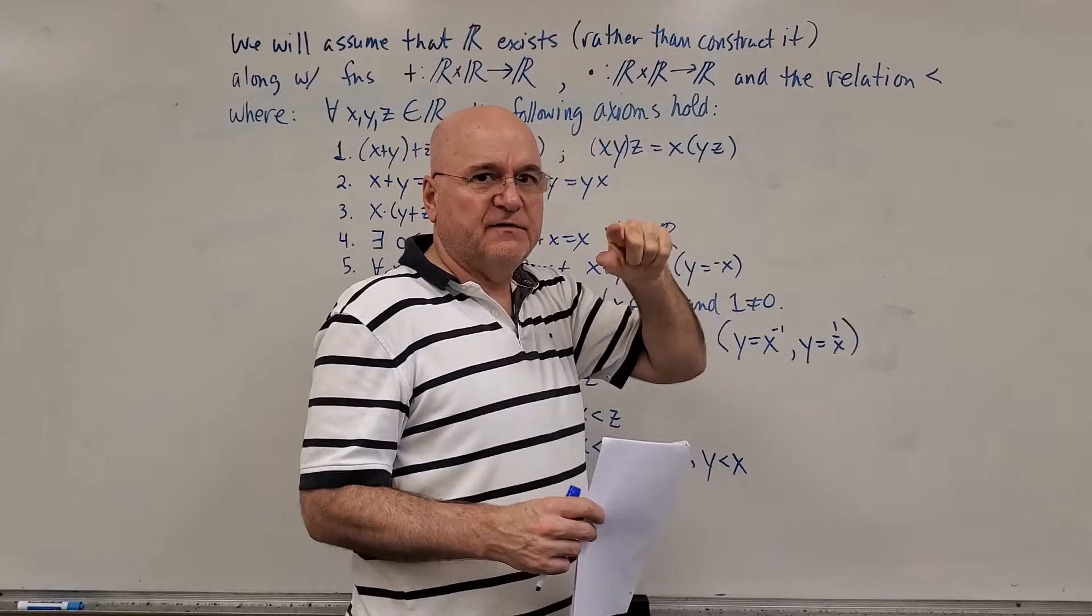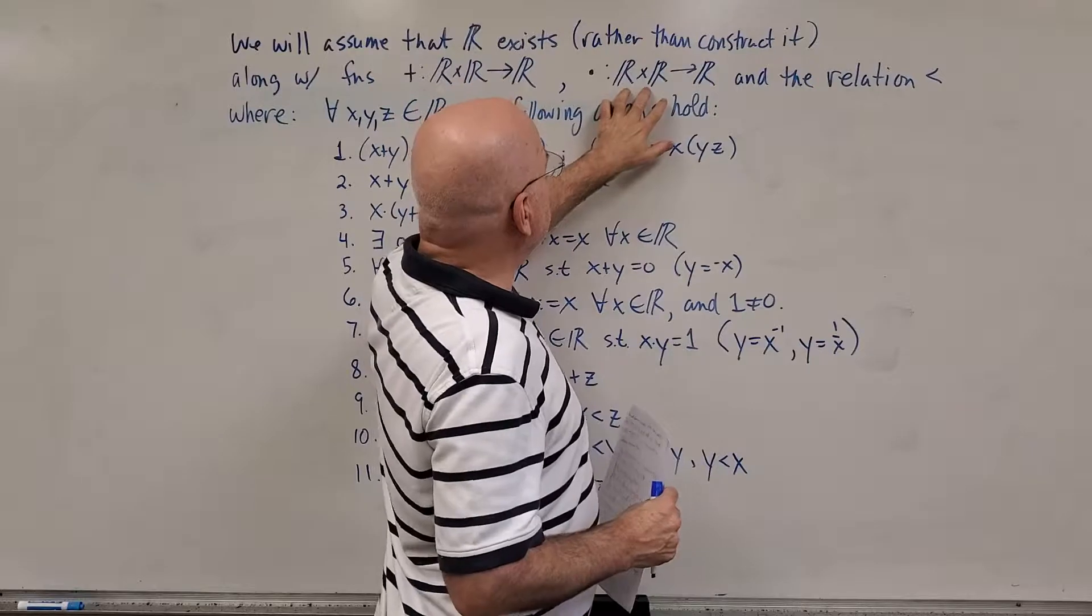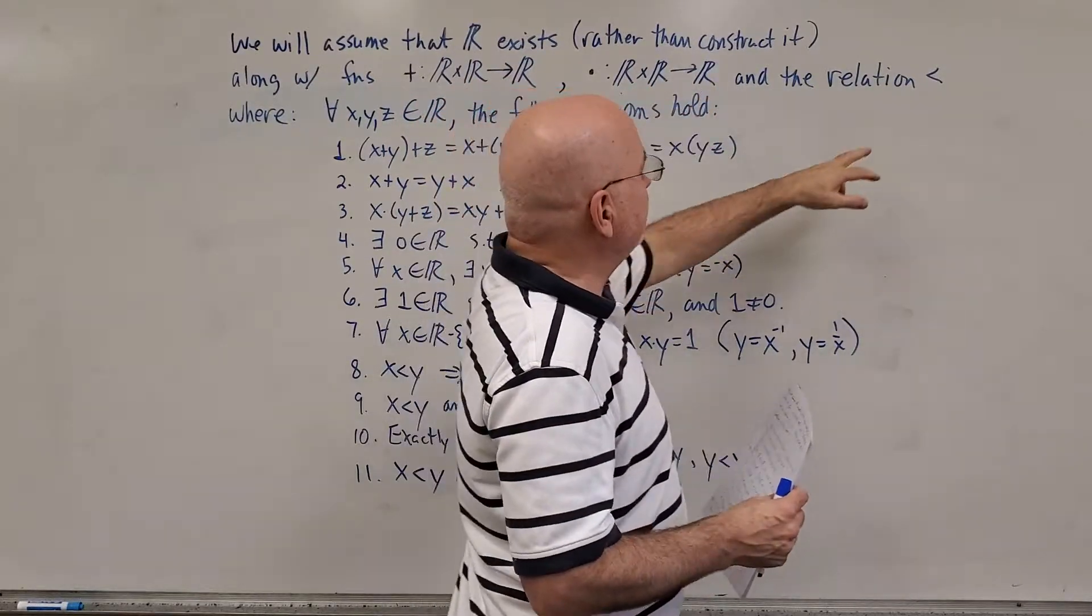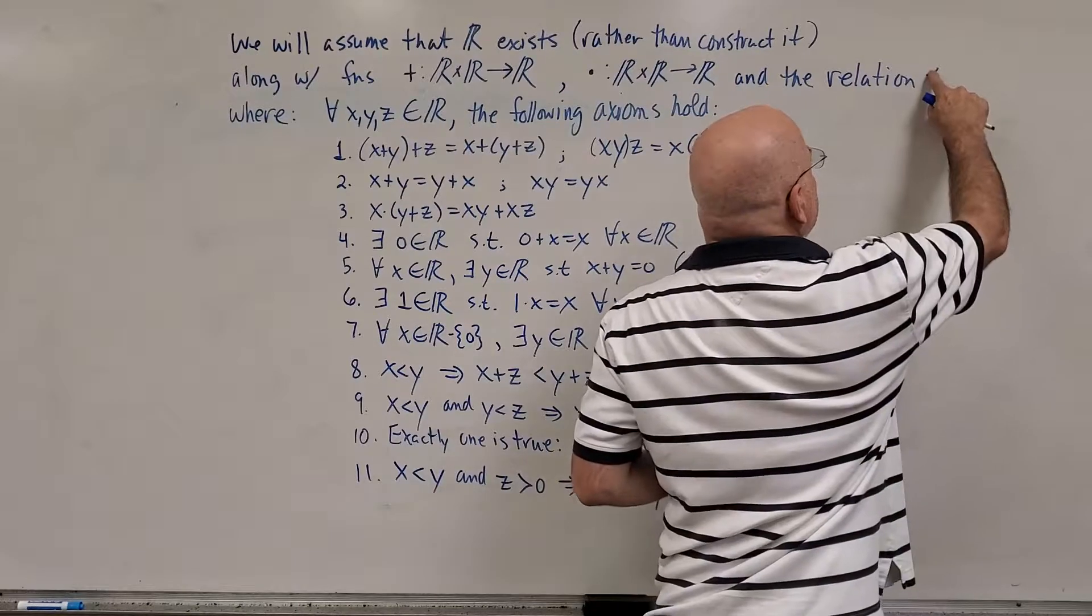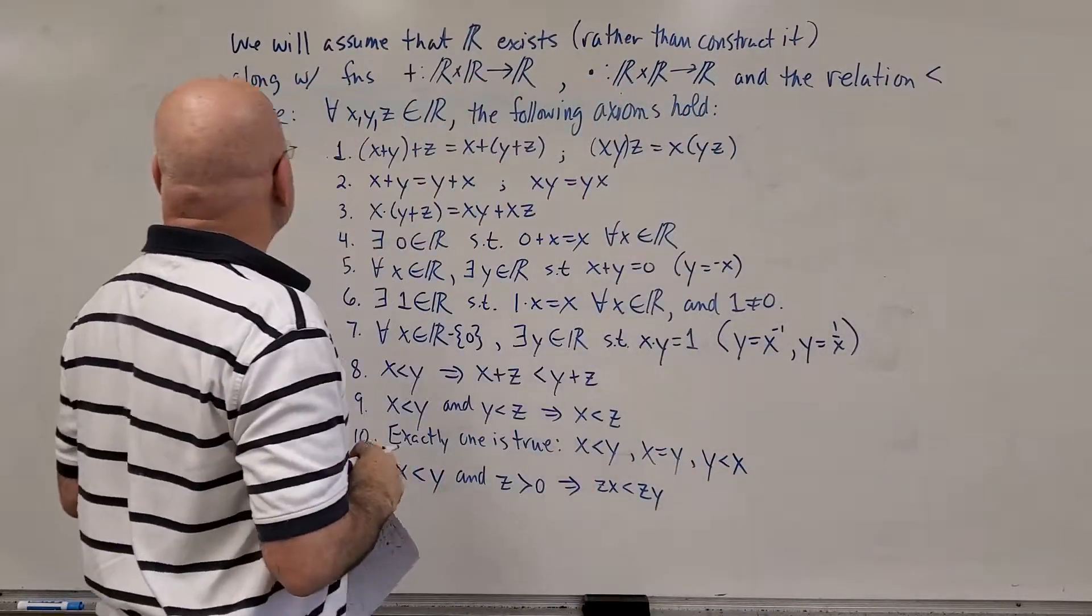This dot, which you could refer to as the times symbol, takes two real numbers, it multiplies them together, and it produces another real number. And the relation, this is a less than, the less than symbol.